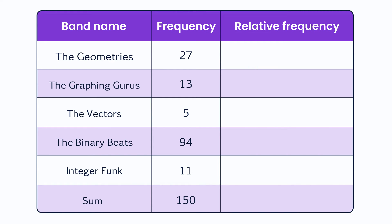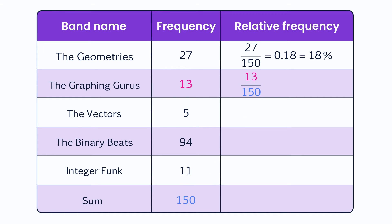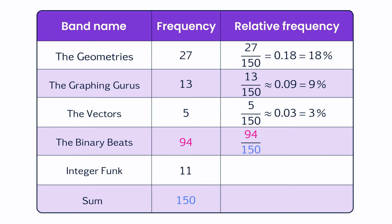For the first category, The Geometries, you take 27 and divide it by 150, which equals 0.18 or 18%. Next, for The Graphing Gurus, it's 13 divided by 150, which approximately equals 0.09 or 9%. For The Vectors, it's 5 divided by 150, which is approximately 0.03 or 3%. The Binary Beats had 94 votes divided by 150, which is about equal to 0.63 or 63%.